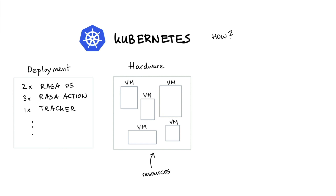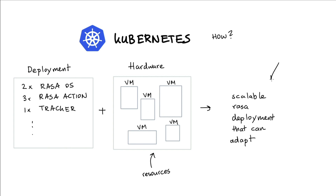These can be different kinds of machines — they don't all have to be the same — but you could argue that these are resources. Each machine will have some memory and some CPUs. The whole point of Kubernetes is that we can take a file describing our deployment and, given a set of hardware, turn that into a scalable deployment that can adapt.